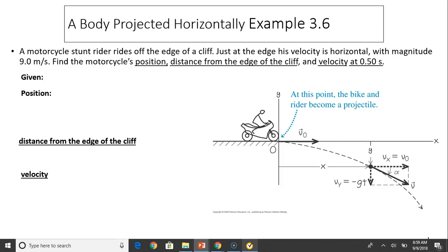Let's look at another example: a body projected horizontally. A motorcycle stunt rider rides off the edge with velocity that is horizontal with magnitude of 9 meters per second. Find the motorcycle's position and distance from the edge. What's given: initial velocity is 9 m/s, α0 equals 0 because it's projected horizontally. V0x equals 9 and V0y equals 0.